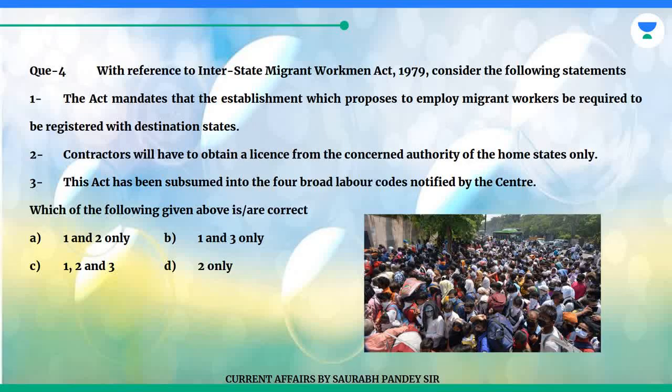Question 4: With reference to the Interstate Migrant Workmen Act of 1979, consider the following statements. 1. The Act mandates that the establishment which proposes to employ migrant workers be required to be registered with destination states. 2. Contractors will have to obtain a license from the concerned authority of the home states only. 3. This Act has been subsumed into the four broad labour codes notified by the centre.